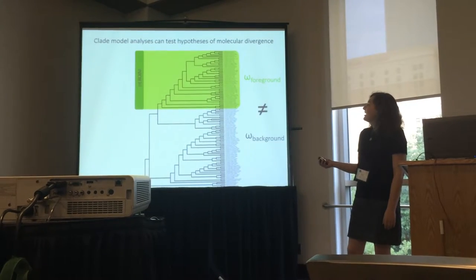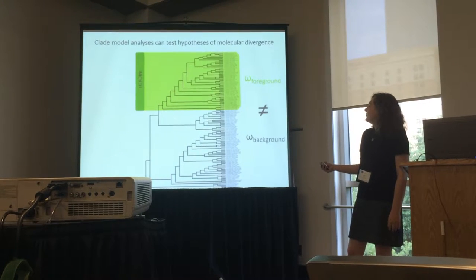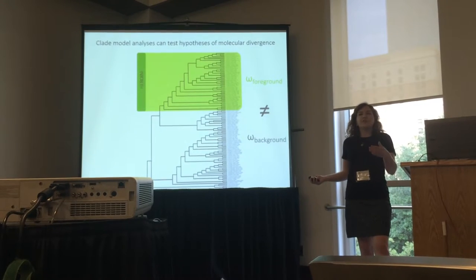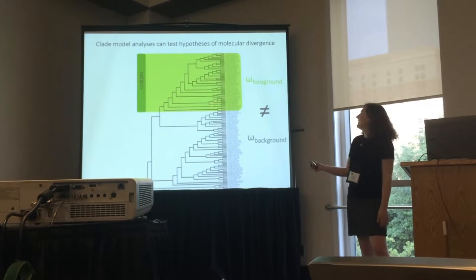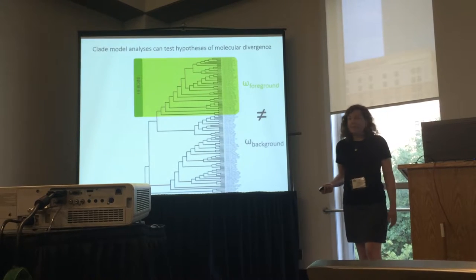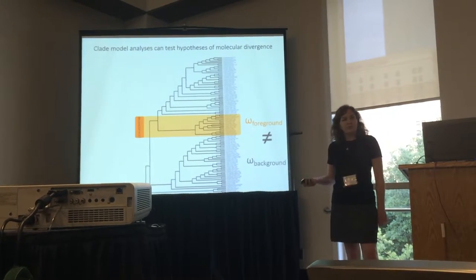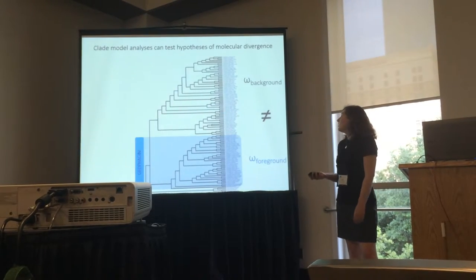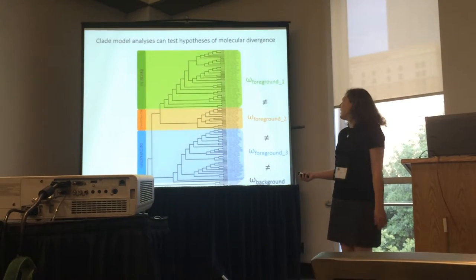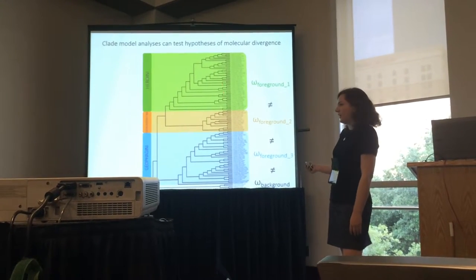These models ask whether there is a class of sites that have a divergent omega parameter. We can say, for example, maybe I expect to see divergent selection in this foreground clade highlighted here, and compare this against a model that doesn't allow for divergence. We can do this for a variety of different partitions, including multiple partitions, and they don't necessarily have to be localized to only one clade.